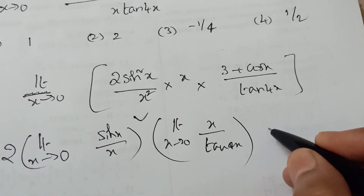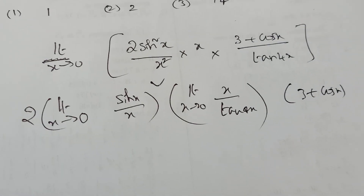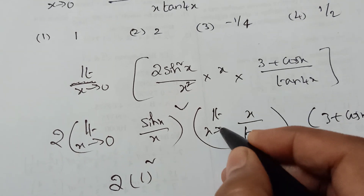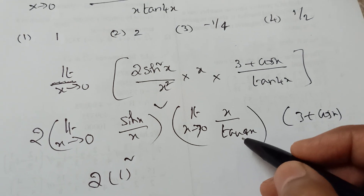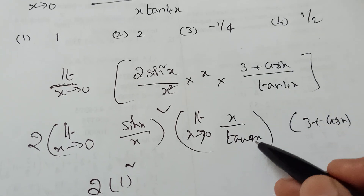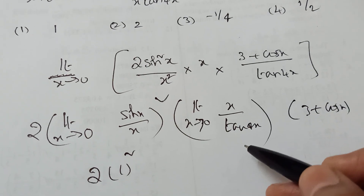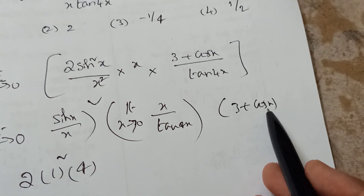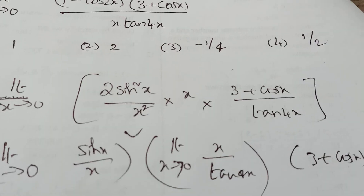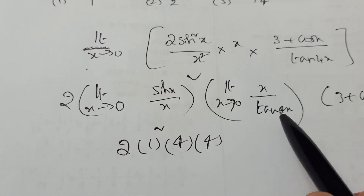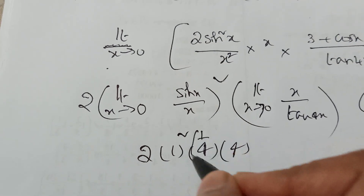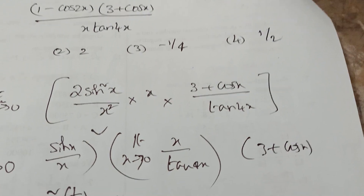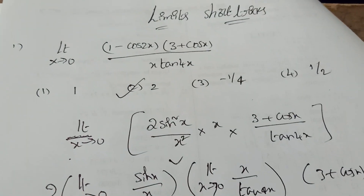For x/tan4x, use the formula tanx/x = 1. Here we write x/(4·tan4x) multiplied by 4, giving 1/4. Now applying limit x→0: cos0 = 1, so 3 + cos0 = 4. We get 2 × 1 × 4 × (1/4) = 2. The 4s cancel and the answer is 2 — option 2.